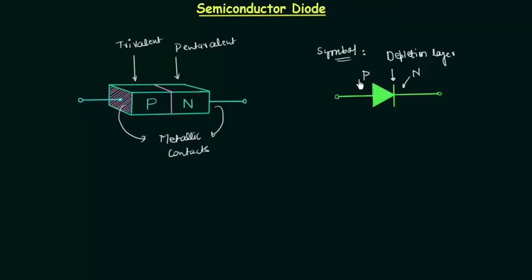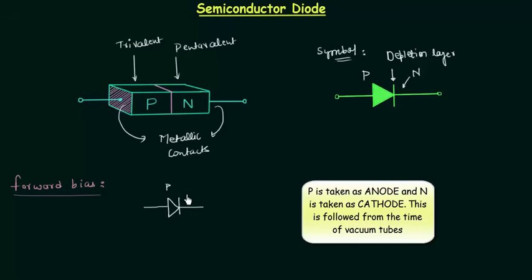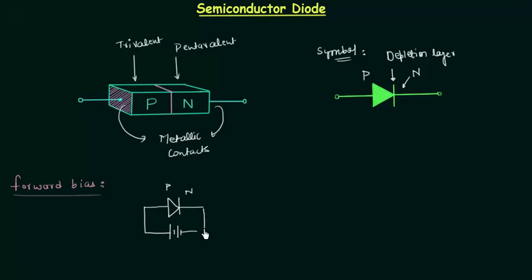Let's forward bias the semiconductor diode using this symbol. In forward bias condition of a PN junction diode, the P side of the diode is connected to the positive terminal and the N side is connected to the negative terminal. This is how the forward bias circuit looks when we use this symbol. Let's say the applied forward potential is Vd and the current through the diode is Id.